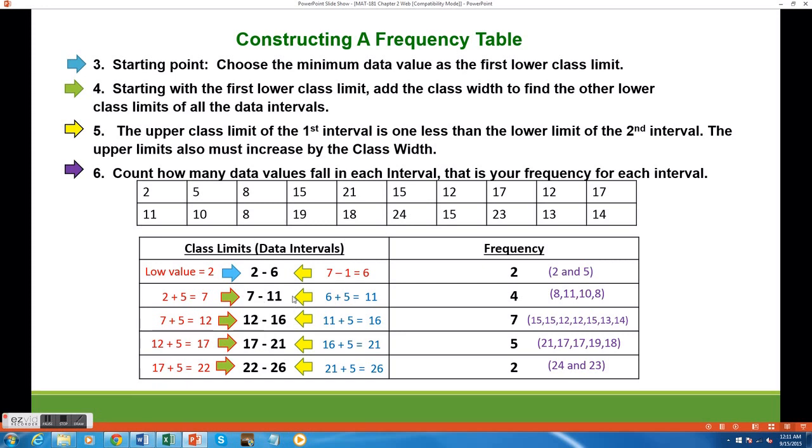The upper limits are created in a similar fashion. We want to start by constructing the first class's upper limit. That must be 1 less than the second class's lower limit. So our first upper limit is 7 minus 1, or 6.